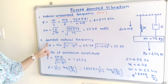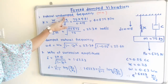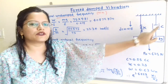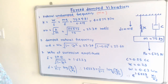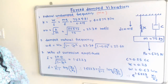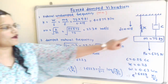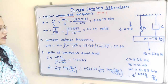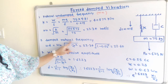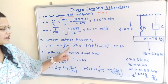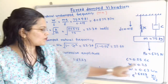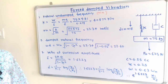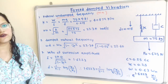Next, find the damped natural frequency ω_D. With a damper, ω_D = ω_N × √(1 − ζ²). With ζ = 0.25 and ω_N = 23.34, we get ω_D = 22.60 radians per second.